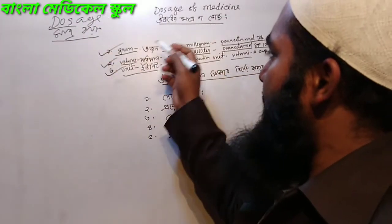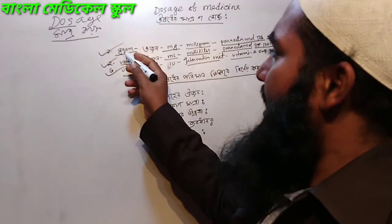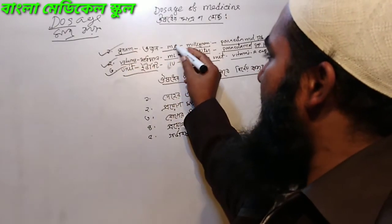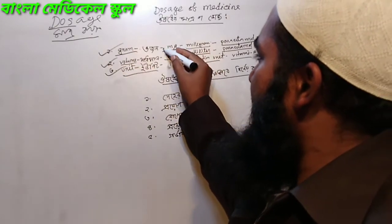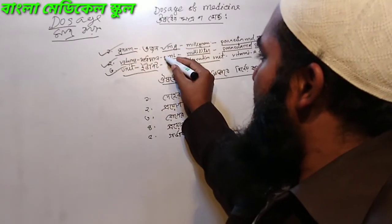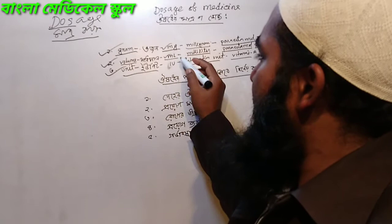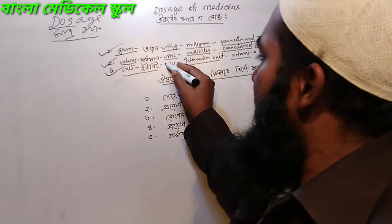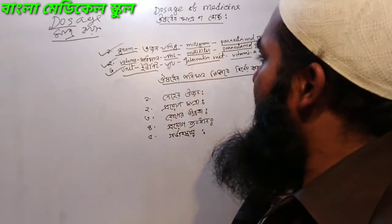So the units of dose are: 2 mg (milligram), mL (milliliter), and IU (international unit).